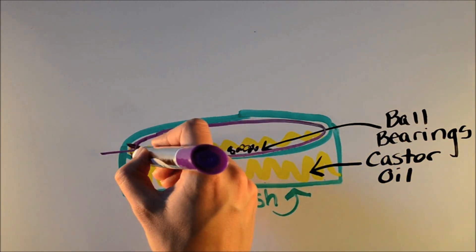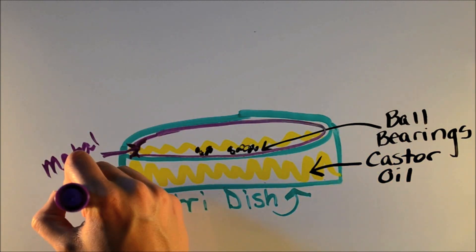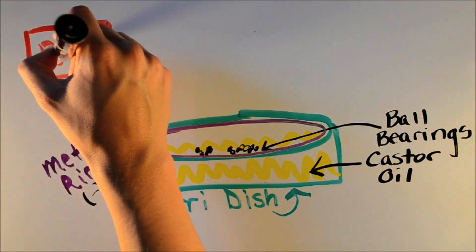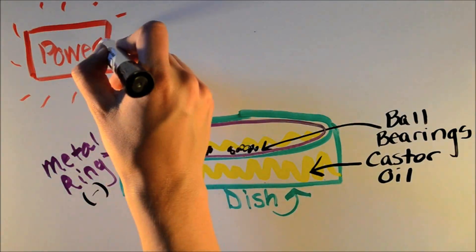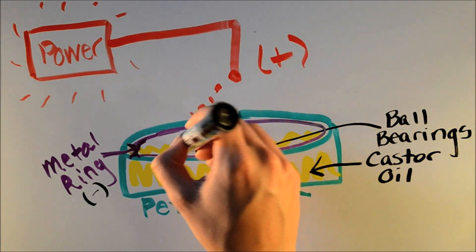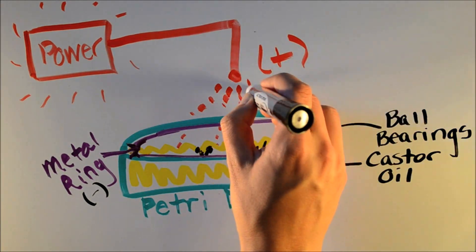The petri dish has a metal ring on the edge, which we apply a negative charge to. Next, we attach a power supply and hang a wire over the top of the petri dish. When we apply a large voltage, electrons get sprayed down to the ball bearings in the dish.